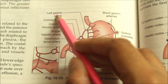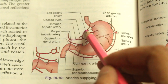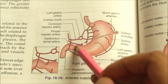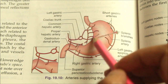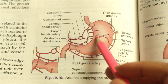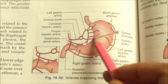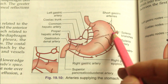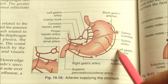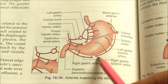The splenic artery, a branch of the celiac trunk, divides into the short gastric arteries and the left gastroepiploic artery.